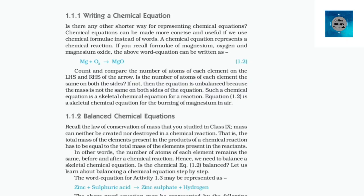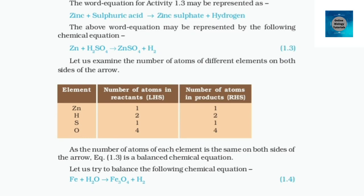The word equation for Activity 1.3 may be represented as: zinc + sulfuric acid → zinc sulfate + hydrogen. The above word equation may be represented by the following chemical equation: Zn + H₂SO₄ → ZnSO₄ + H₂ (equation 1.3). Let us examine the number of atoms of different elements on both sides of the arrow. Here, the number of atoms of Zn, H, S, and O on LHS and RHS are equal. As the number of atoms of each element is the same on both sides of the arrow, equation 1.3 is a balanced chemical equation.